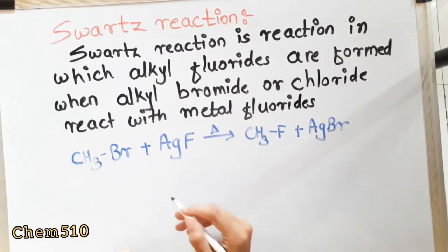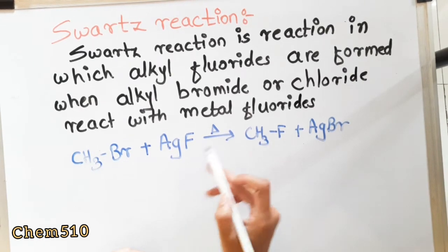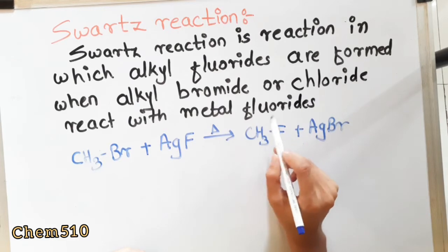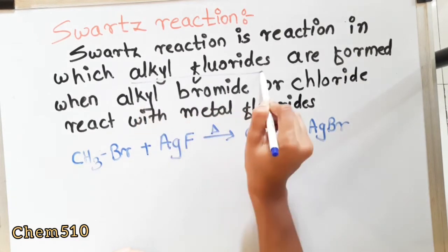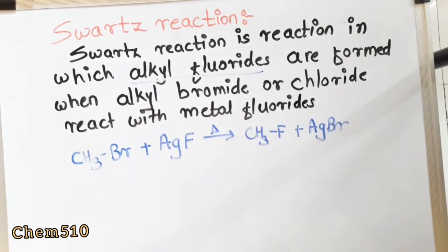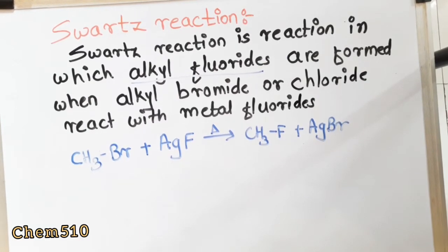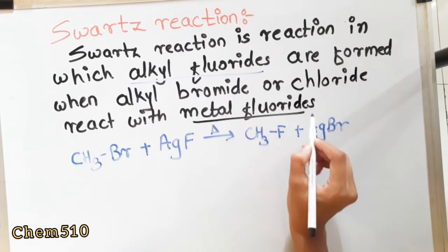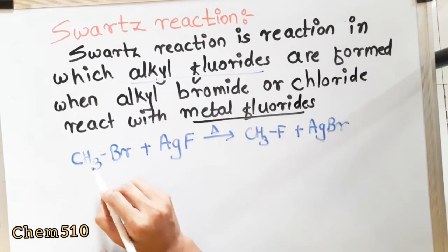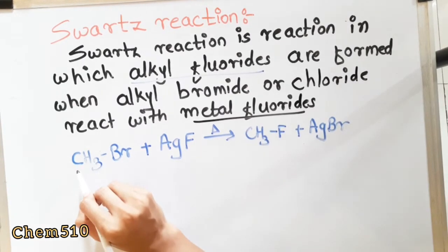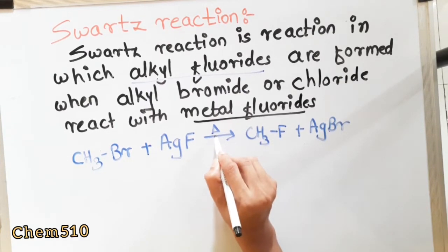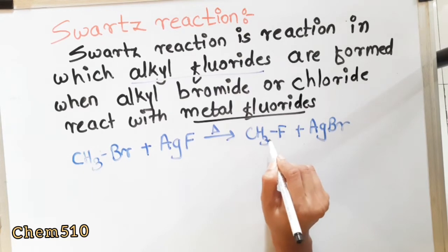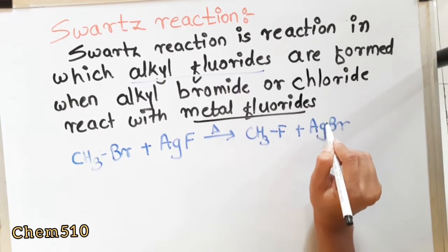The Swarts reaction is a reaction in which alkyl fluorides are formed when alkyl bromide or chloride reacts with a metal fluoride. So the product is alkyl fluoride, and the reactants are alkyl bromide or chloride reacting with metal fluoride. For example: CH₃Br (methyl bromide) reacts with AgF by heating to form CH₃F (methyl fluoride), and AgBr is formed as a byproduct.